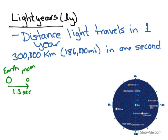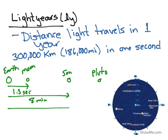If we are going to the Sun from the Earth, that takes about 8 minutes. And if we are going to go to Pluto, that takes about 4 hours traveling the speed of light.